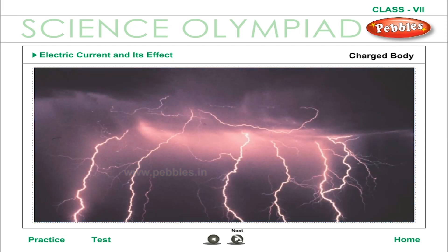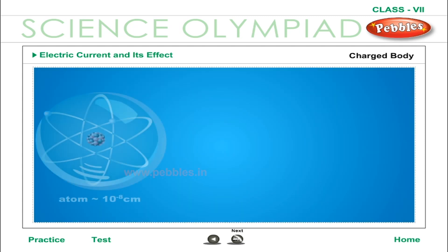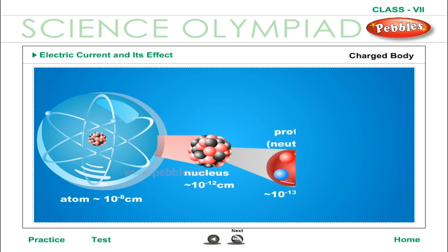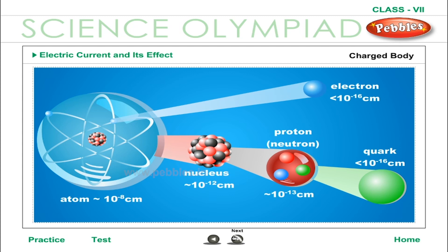Charged bodies in terms of transfer of electrons: bodies are originally electrically neutral. When two bodies are rubbed together, free electrons are transferred from one body to the other. The body that gains free electrons becomes negatively charged, and the body that loses free electrons becomes positively charged. It must be clearly understood that electrification due to positive charge is not because of the transfer of protons, but is due to the deficiency of electrons.